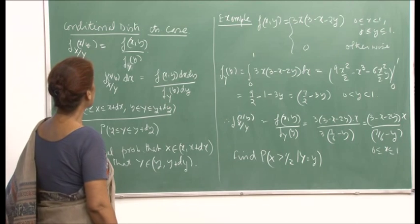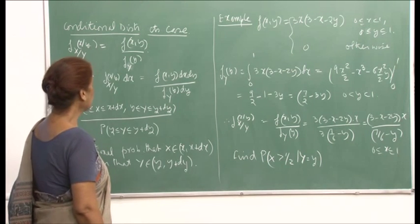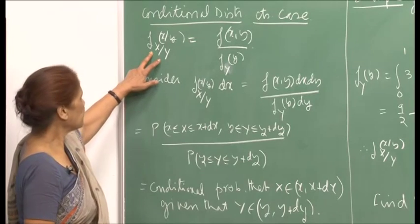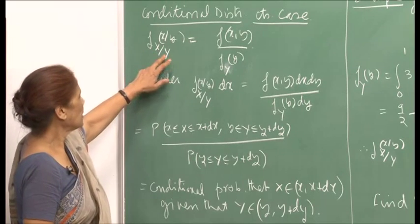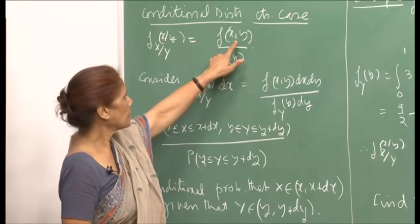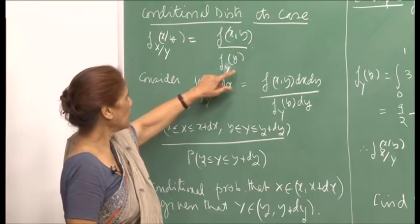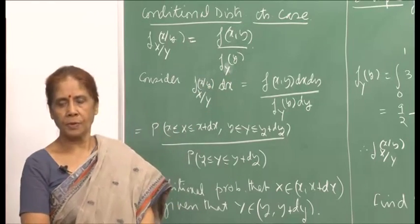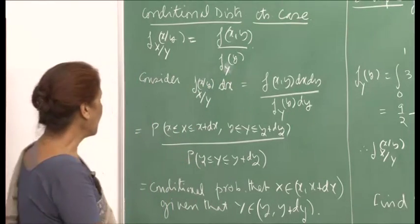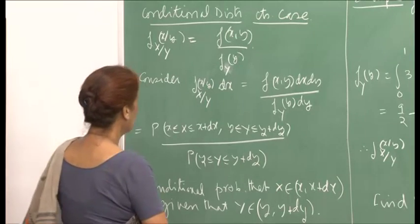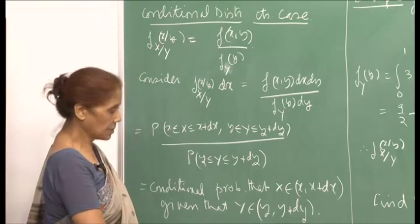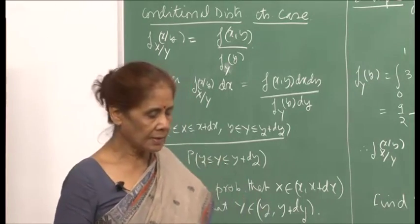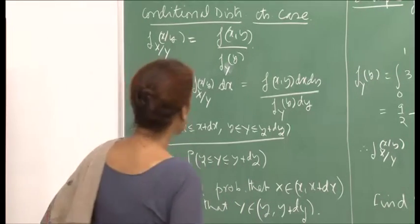Let me now talk about the conditional distribution when the random variables are continuous. In that case, it will be your probability density function x given y. You write it as the joint f(x,y) at x comma y divided by the marginal of y at small y. The way to explain this is because in the continuous case, the probability at a fixed point is 0.